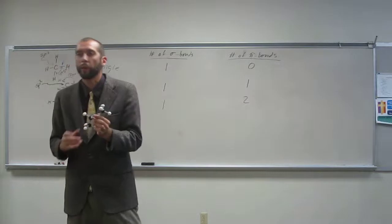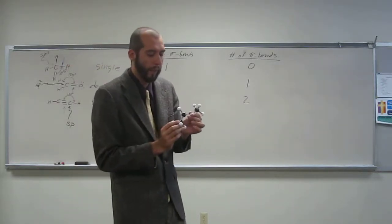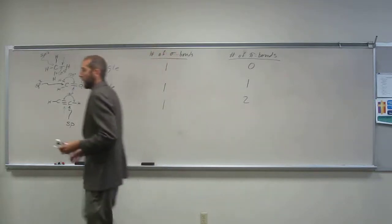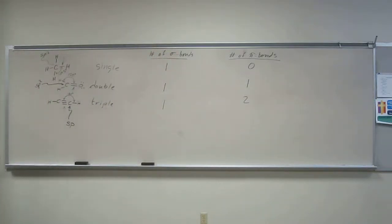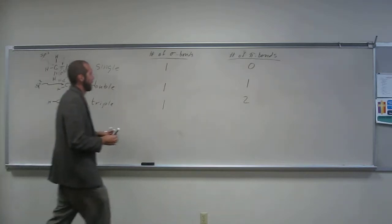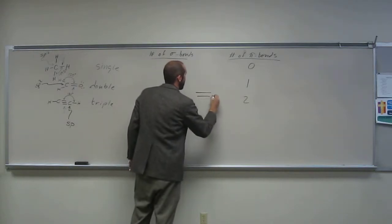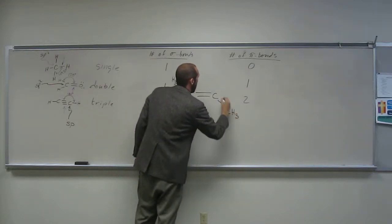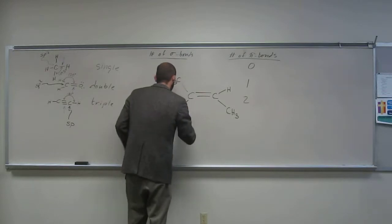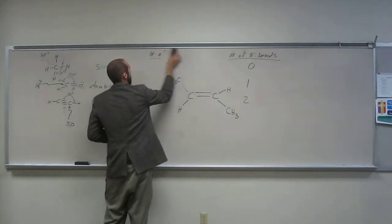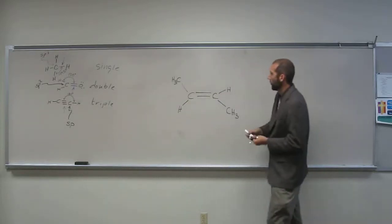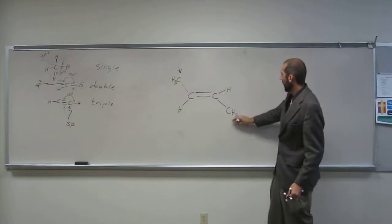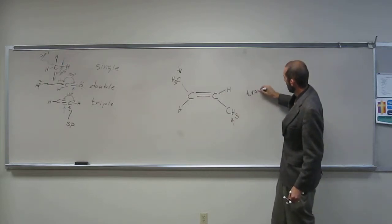E is this weird German word that we won't get into. So you can either call it trans—let me write it. This is trans because the big groups are opposite of each other, or E.